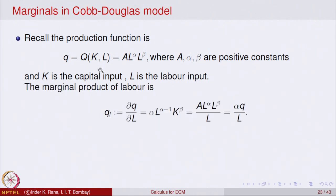Once we differentiate this with respect to L, the partial derivative of Q with respect to L gives us: A is a constant and L raised to power alpha, so alpha comes out. It becomes A into alpha times L raised to power alpha minus 1, and K raised to power beta remains as it is, since K does not depend on labour. That equals alpha into L raised to power alpha minus 1 into K raised to power beta.